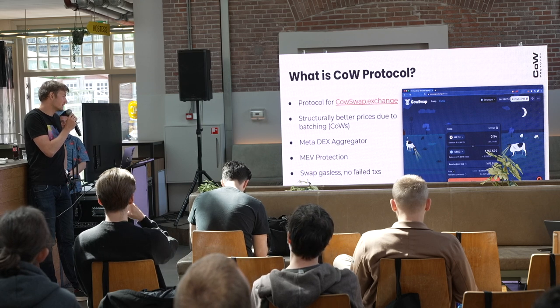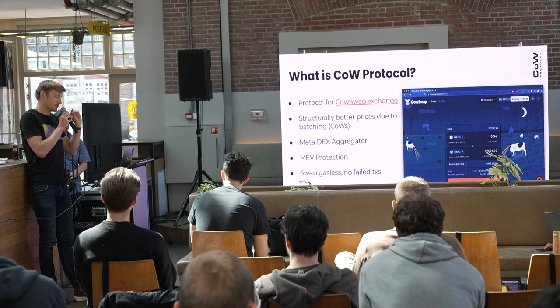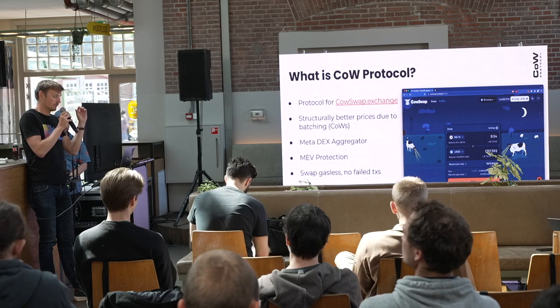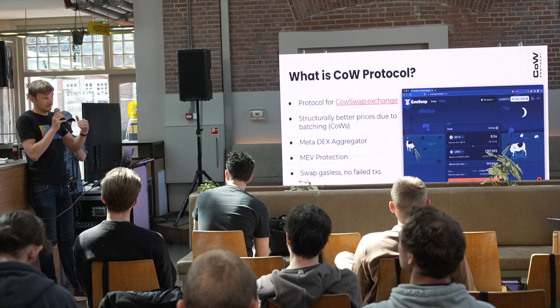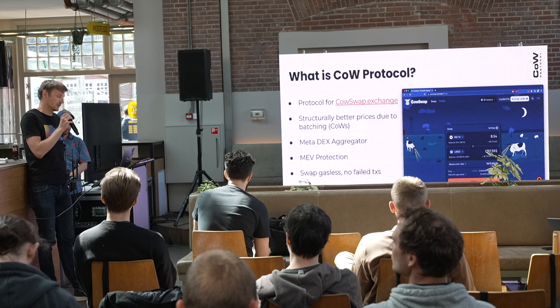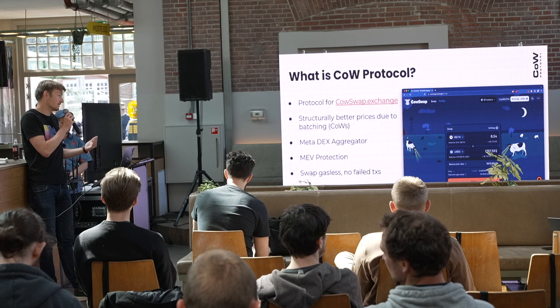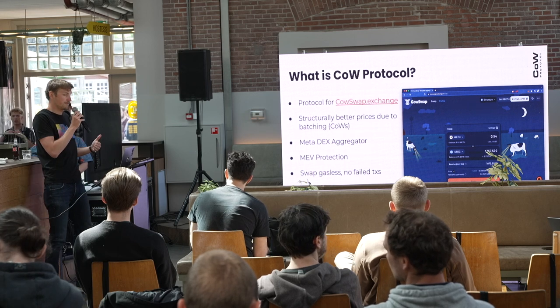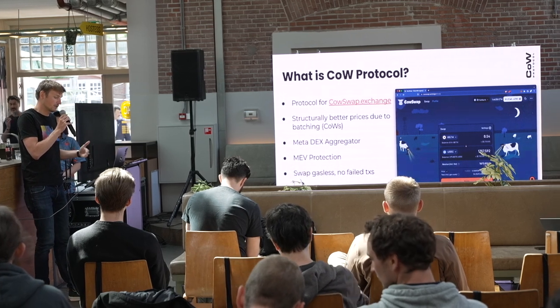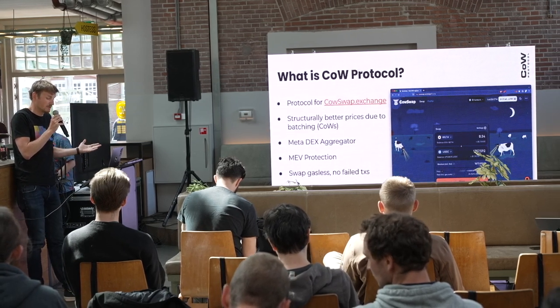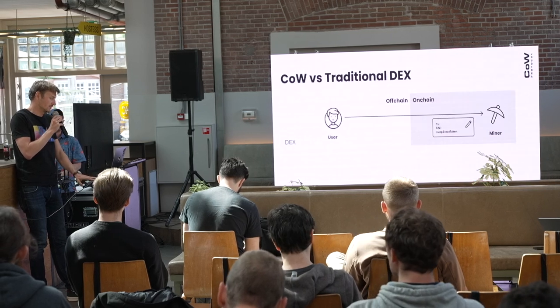In traditional exchanges, if you have a big slippage tolerance, you'll likely find some searcher which takes your trade and sandwiches it by moving the price exactly to your slippage tolerance. This is not possible in CowProtocol because a solver that would suggest such a settlement would not win the competition — they don't give you any surplus. The solver that wins the batch is the one providing the most value. Additionally, from a user perspective, swaps are gasless — you don't pay any ETH for your trades and never have failed transactions.